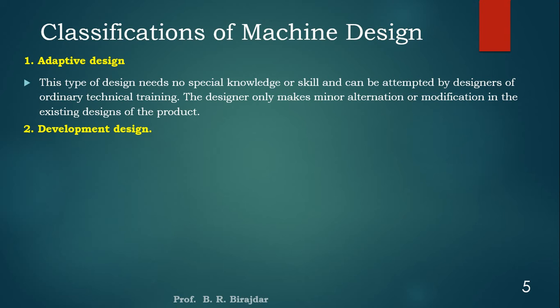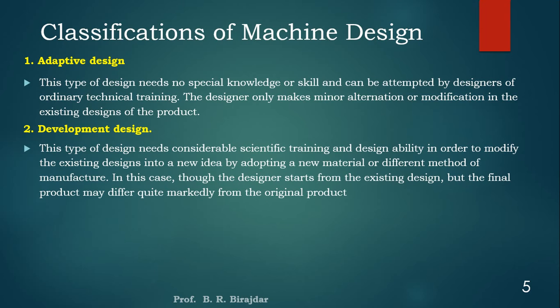The second type is development design. This type of design needs considerable scientific training and design ability in order to modify an existing design into a new idea by adopting a new material or a different method of manufacturing. Here the designer starts from the existing design, but the final product may differ markably from the original product. We make considerable changes in the design — that is called development design.